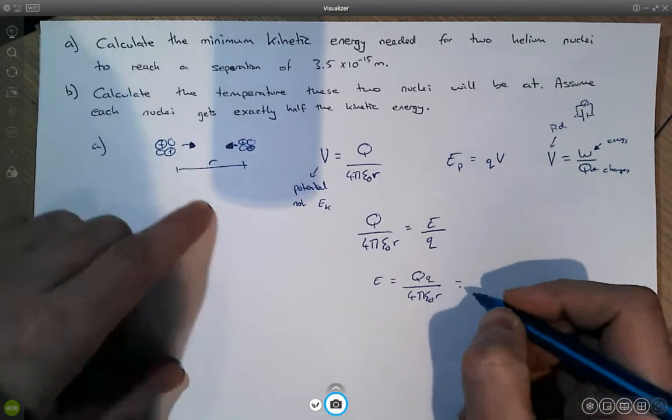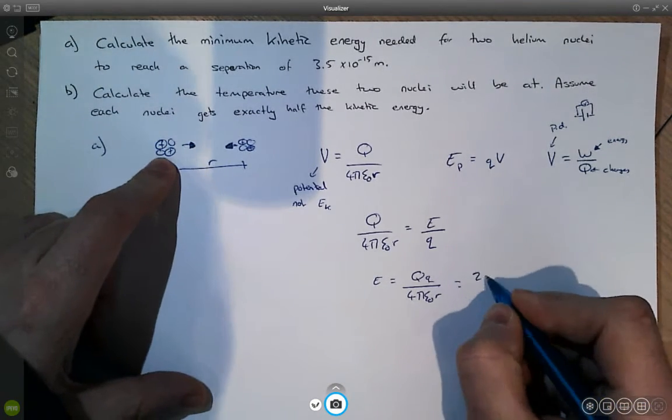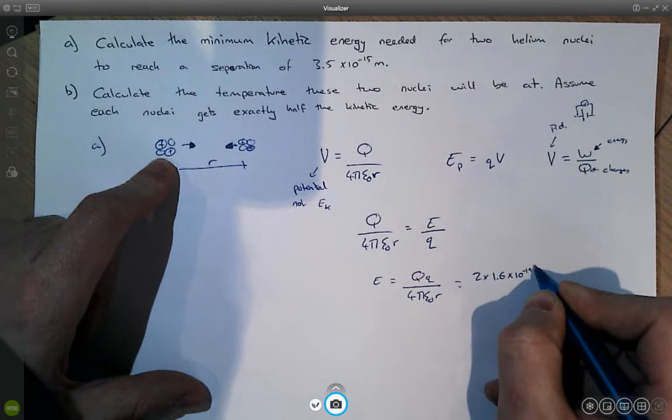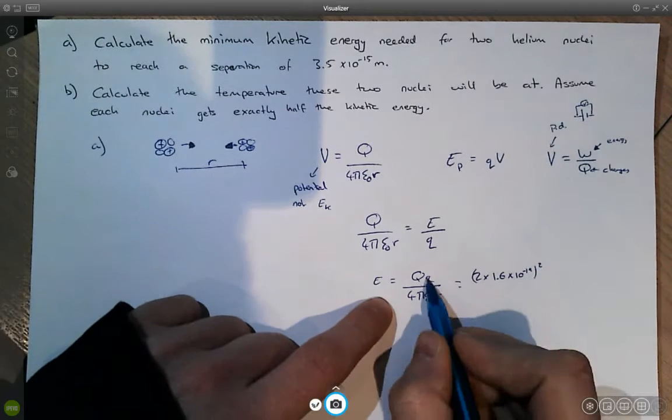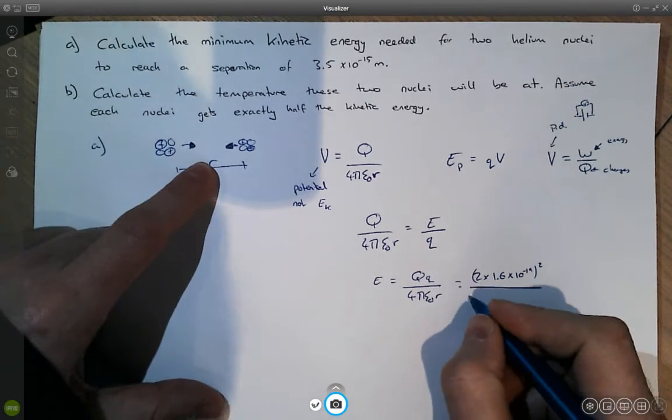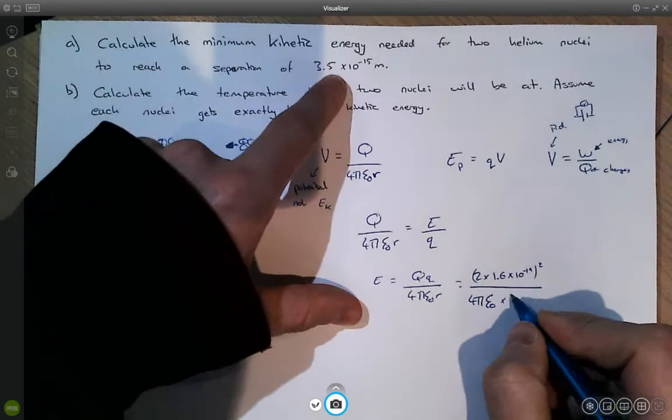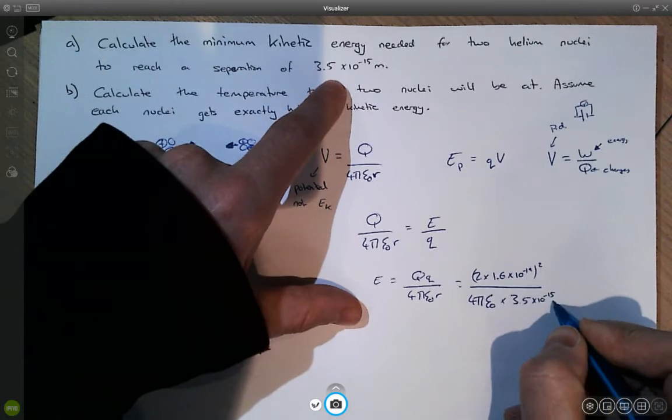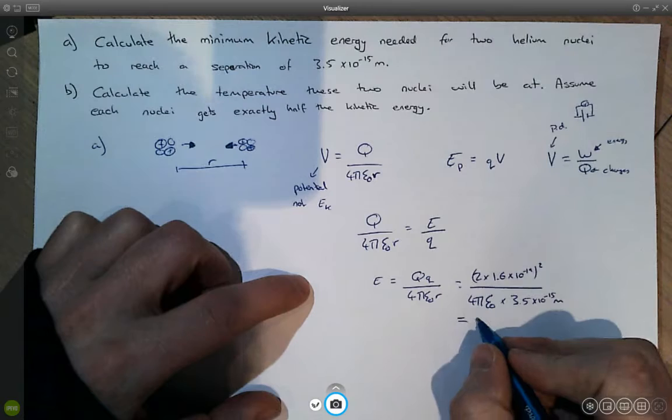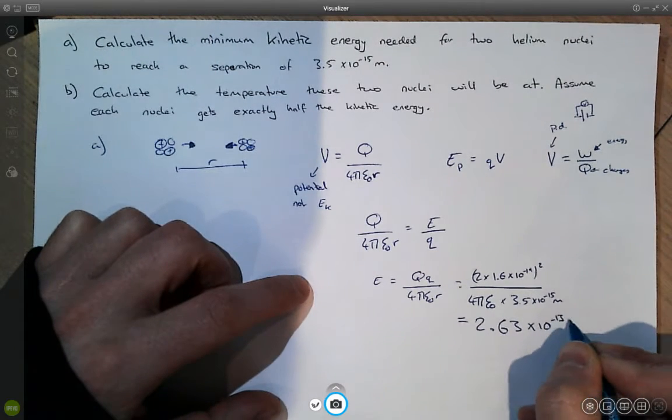So the charges on the two helium nuclei is obviously two lots of the charge on an electron. And then we're obviously going to square that because we've got one charge times by the other and they're identical. And then over four pi epsilon naught times by the radius 3.5 times 10 to the minus 15 meters. And if we type that into our calculator, we get our answer is 2.63 times 10 to the minus 13 joules.